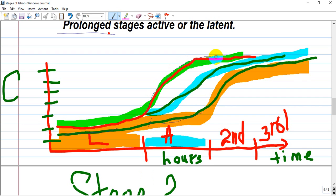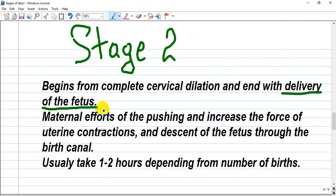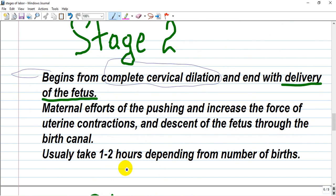Stage 2 begins from complete cervical dilation at 10 centimeters and ends with delivery of the fetus. Maternal pushing efforts increase the force of uterine contractions. The patient can be administered oxytocin to help contractions if there are no dangers of uterine rupture or scars from previous cesarean section. Usually takes 1-2 hours depending on number of births.